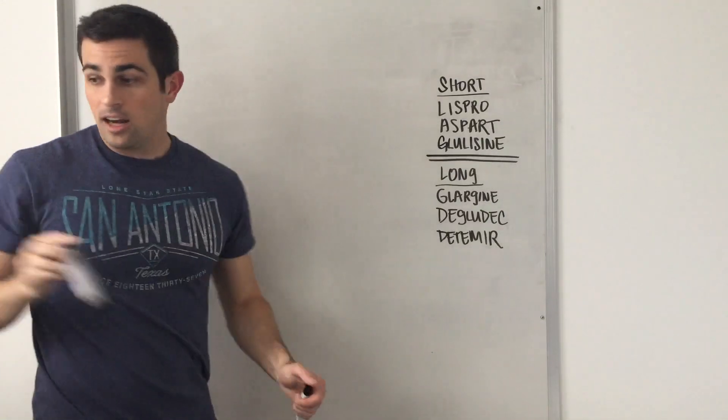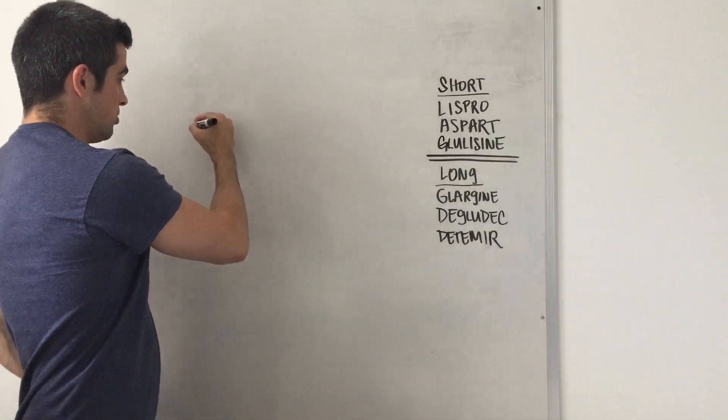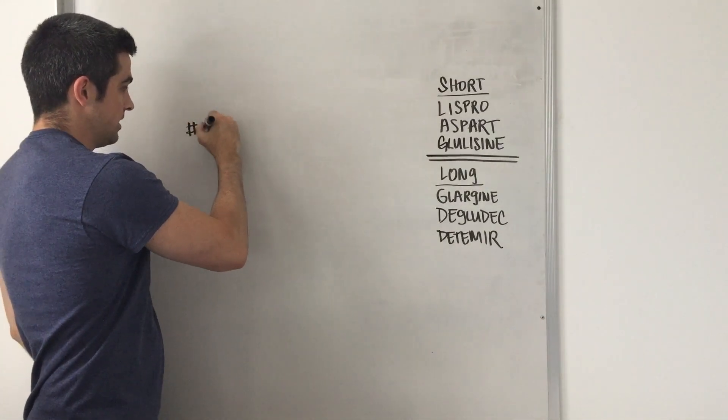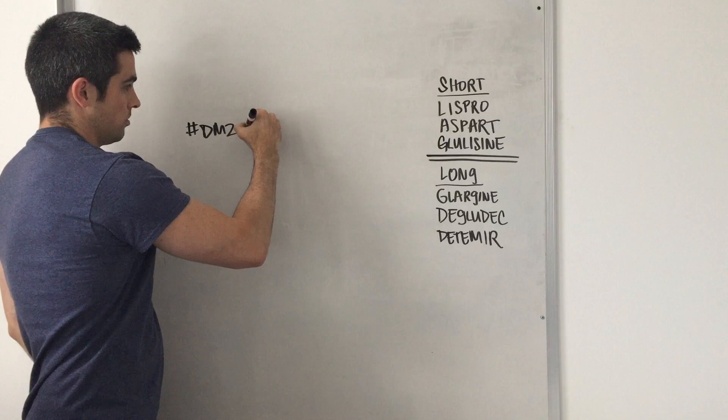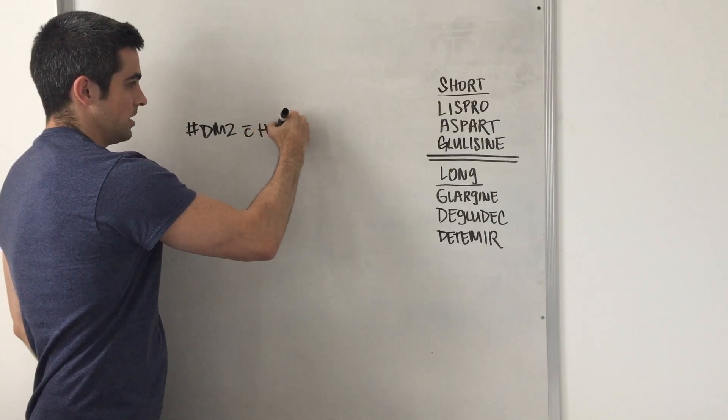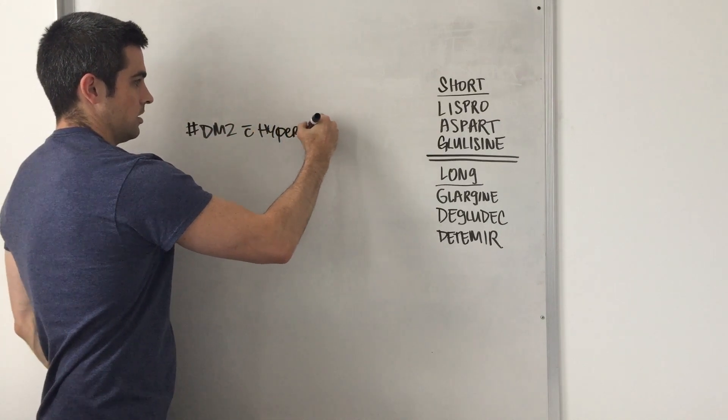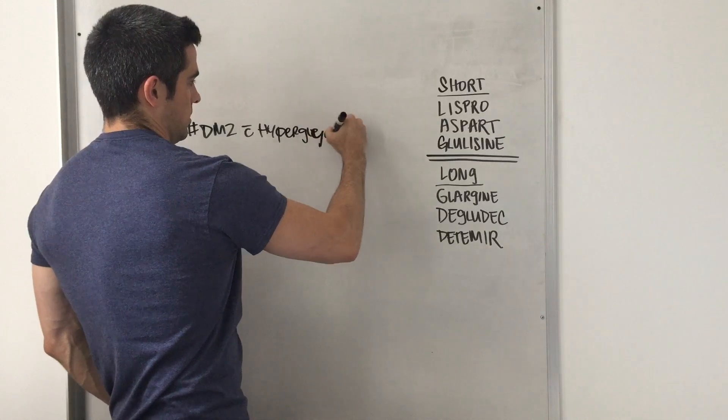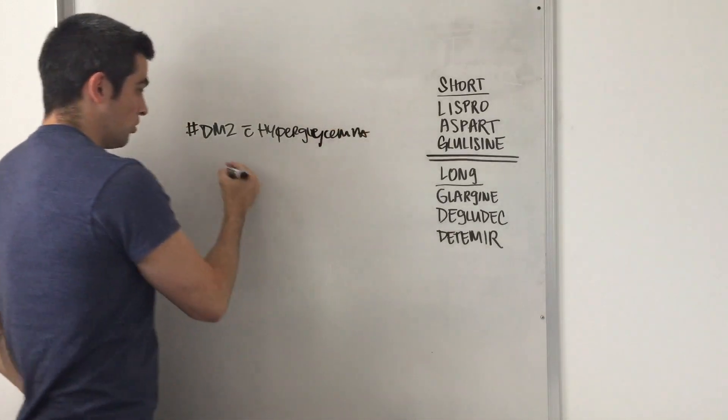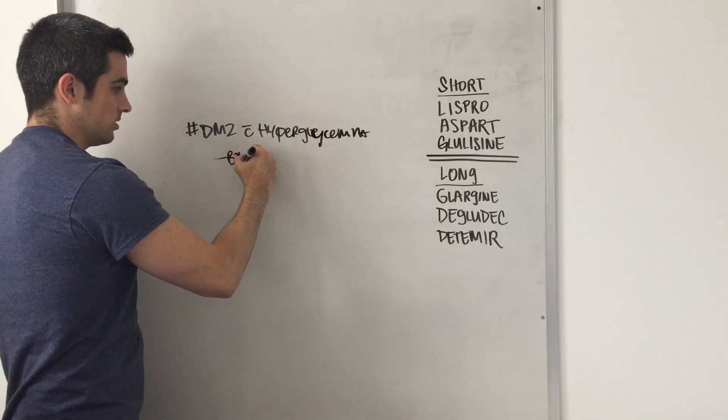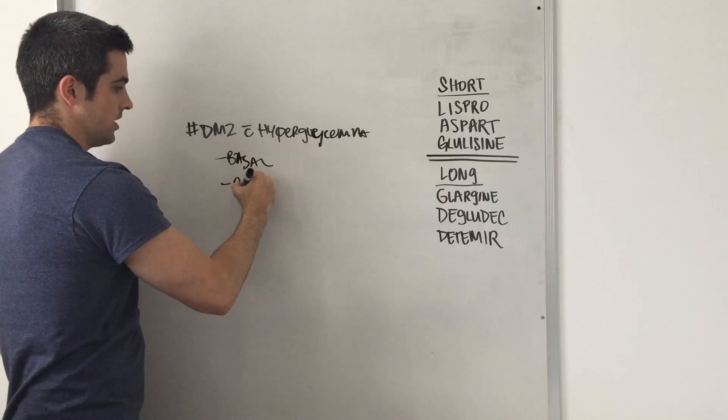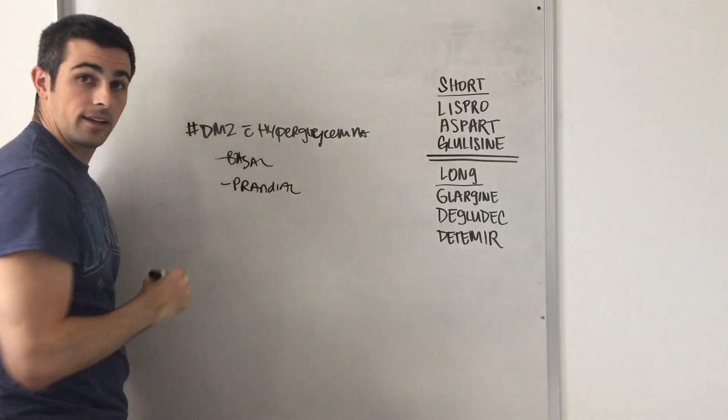And then finally, writing it up. You're going to write their diagnosis, which would be DM2 with hyperglycemia. And then you're going to want to talk about their basal level and their prandials and how they are working.